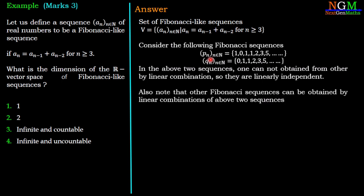Moreover, any other Fibonacci-like sequence can be obtained using linear combination of Pₙ and Qₙ. Therefore, these two sequences behave as basis vectors for the vector space V, which is the Fibonacci-like sequences.